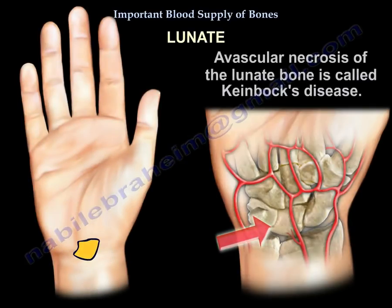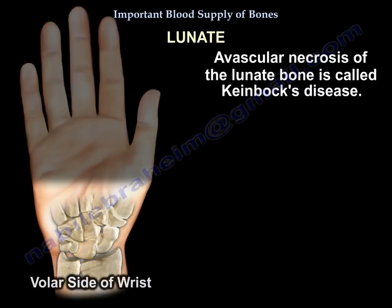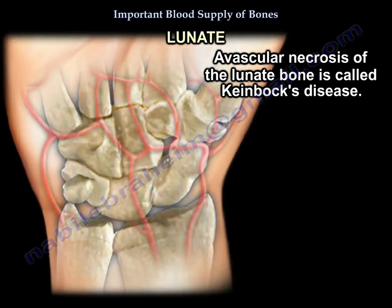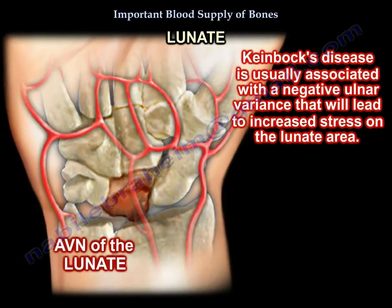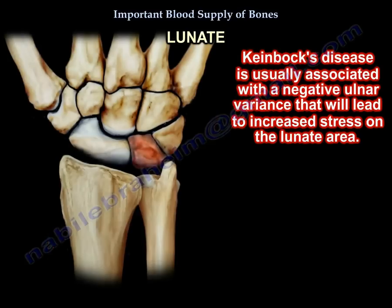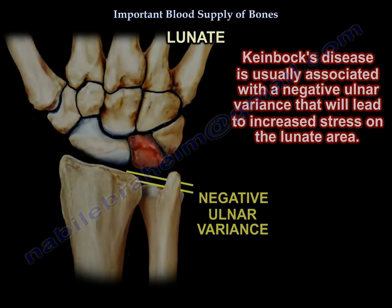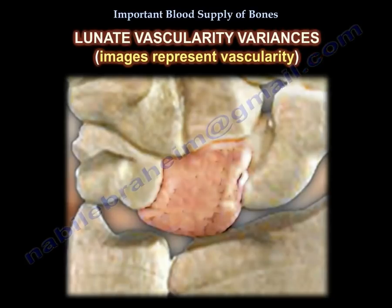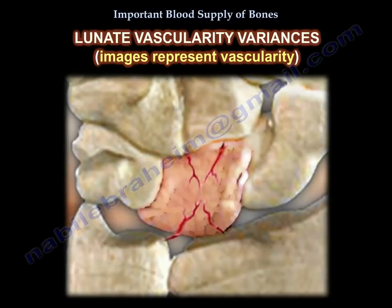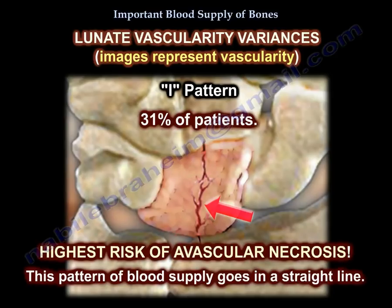Avascular necrosis of the lunate bone is called Kienböck's disease. It is usually associated with ulnar negative variant, which leads to increased stress on the lunate area. The lunate has unique patterns of blood supply: the Y pattern, the X pattern, and the I pattern. The I pattern carries the highest risk for avascular necrosis because its blood supply goes in a straight line, unlike the X or Y patterns which have multiple branches.